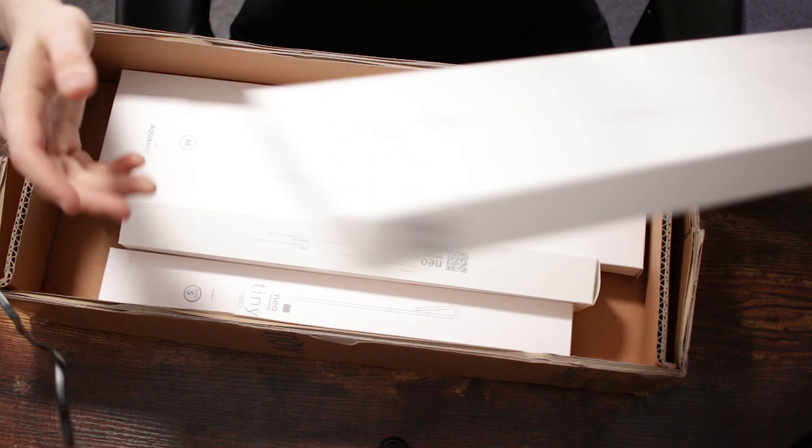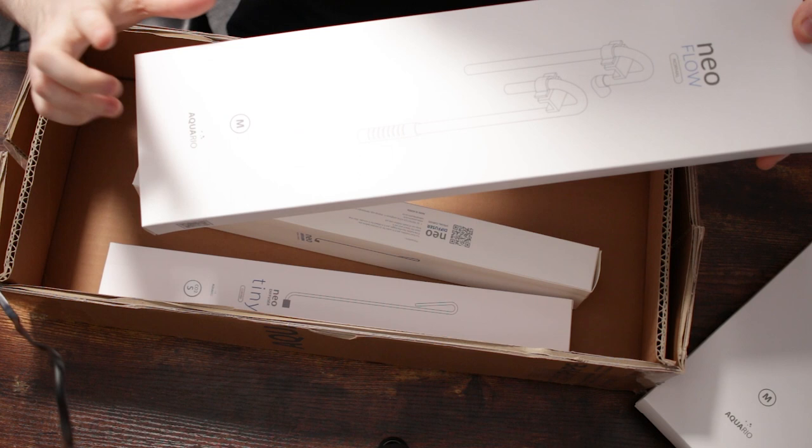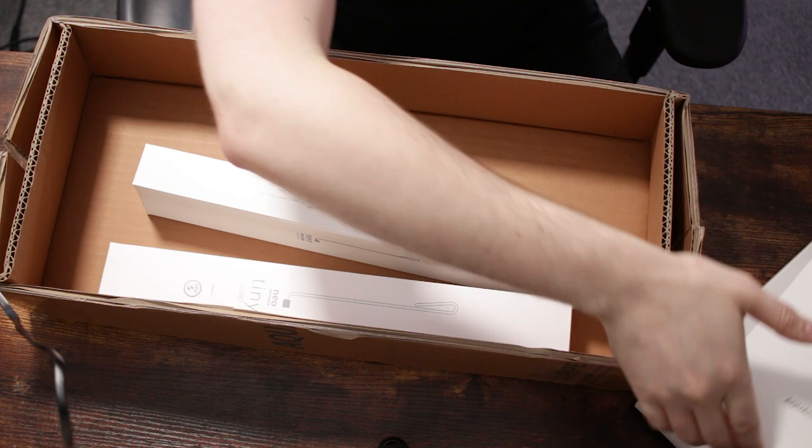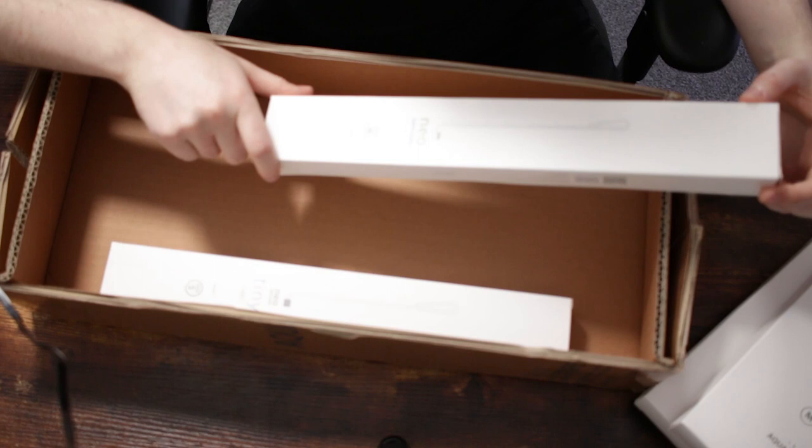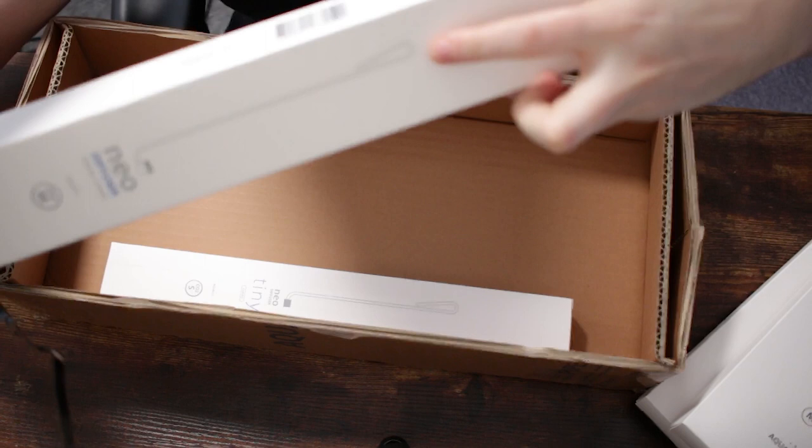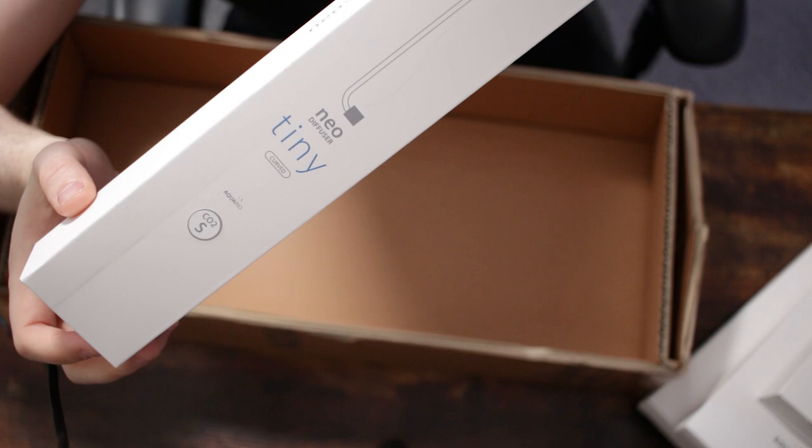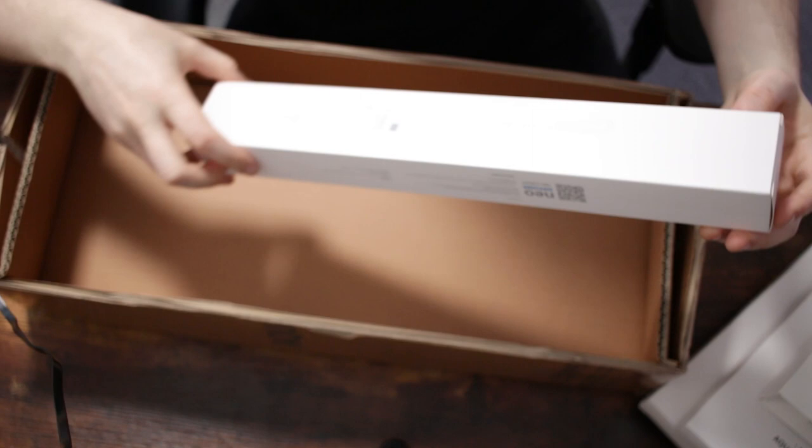We've got another neo flow pipe and this is the medium size. I believe they do two sizes, large and medium. This one is 13 millimeters and obviously the large one is for a larger diameter pipe. We've got the neo diffuser medium, very cool. This is a special curved version so it has a curve at the top of the diffuser there, the pipe, so that goes over the top of your tank. And then another one, the neo diffuser tiny. This has to be the smallest diffuser I've ever seen. We've also got a little curve at the top once again to go over the top of the tank.